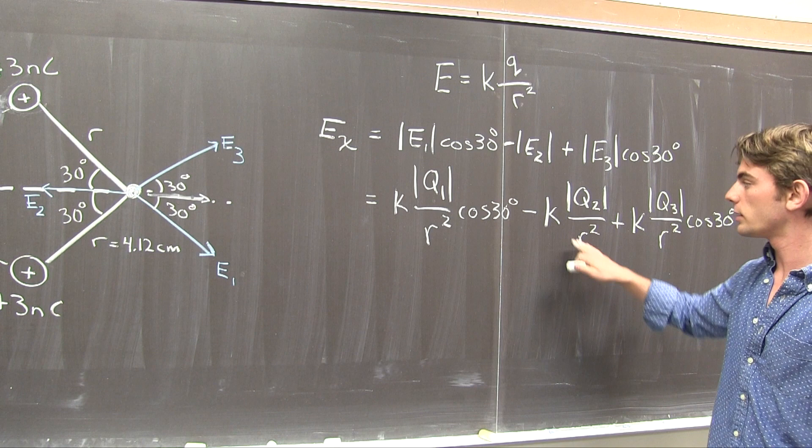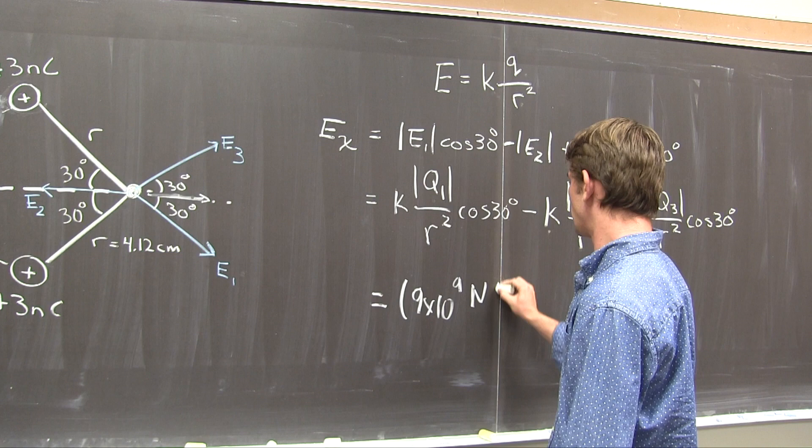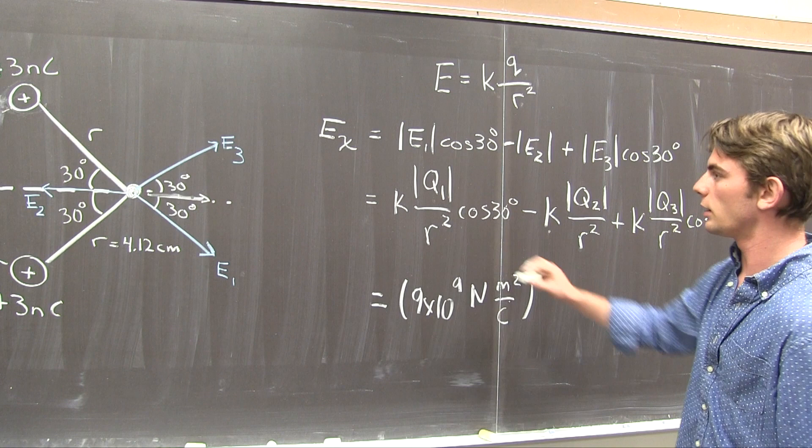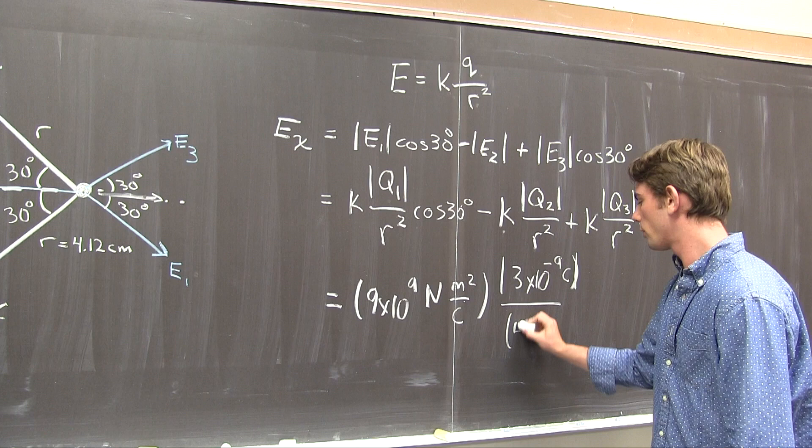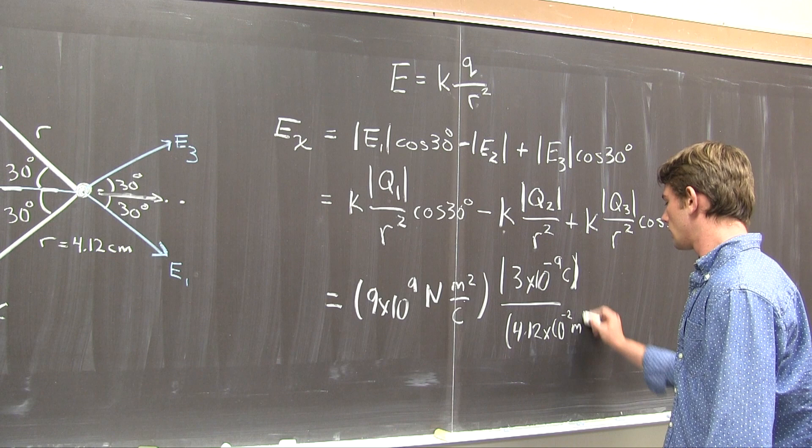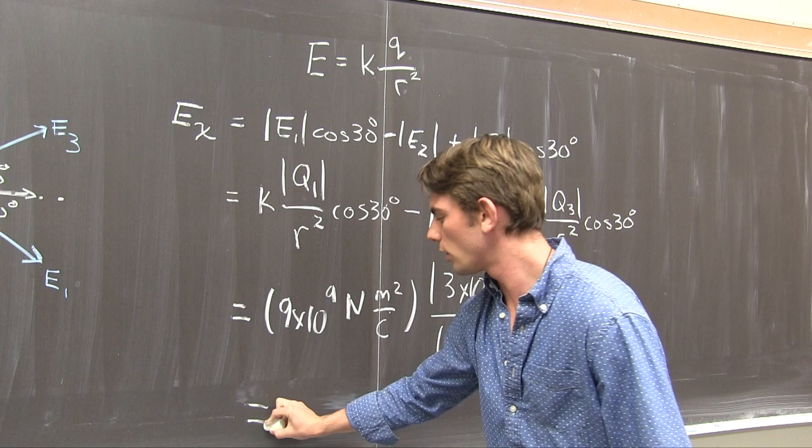So multiplying these out, we'll have 9 times 10 to the 9 Newton times meters squared over Coulomb. And then Q1 we know is 3 nanocoulombs, so that's times 10 to the negative 9, all over R squared or 4.12 centimeters is times 10 to the negative 2 meters, squared times the cosine of 30. Minus, plugging in the values for the rest, we should get that the overall electric field in the x component is 16,900 Newtons per Coulomb.